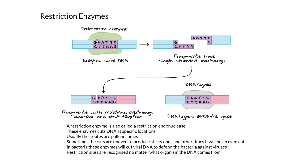In this example, you can see that the restriction enzyme cuts the DNA in a staggered way — it's almost like a Lego block and it fits together perfectly. Using restriction enzymes, we can combine different pieces of DNA. When the enzyme cuts in a staggered fashion, the resulting ends are called sticky ends.